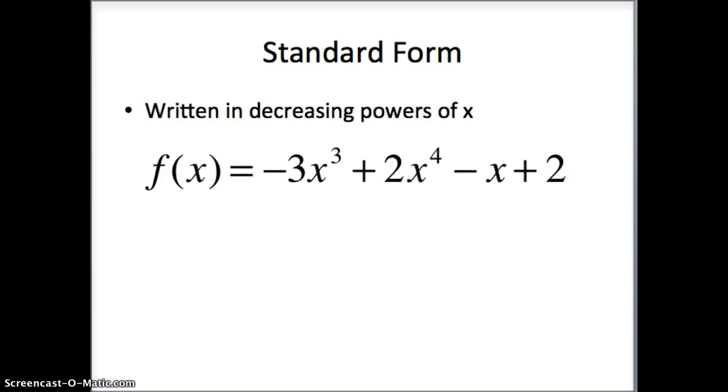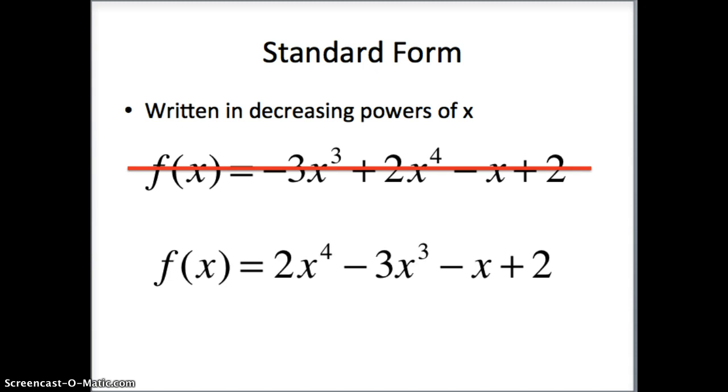We have what's called standard form, and the standard form of a polynomial means that whenever we write this polynomial, we're going to write it in decreasing powers of x. And so what you see here, the problem is that the x cubed and the x to the 4th aren't in order. The x to the 4th really should be written first because it's a higher power. So if I was going to write that function in standard form, it would be 2x to the 4th minus 3x cubed minus x plus 2. Now I have it in decreasing powers. There's x to the 4th, then x cubed, then I have x to the 1st power, and then no x at all at the end.